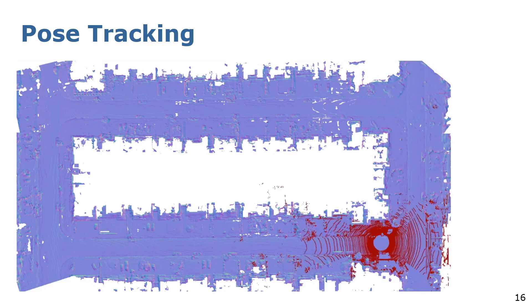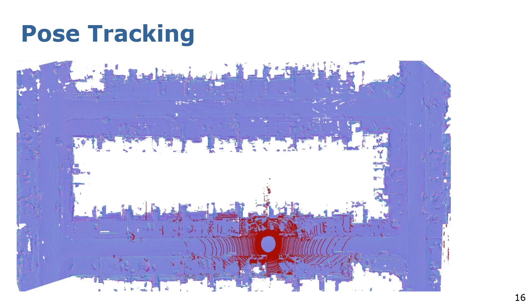Here, we can see our approach running on the Apollo South Bay dataset. We have learned the blue map from a set of scans. The position of the red scans can then be tracked by always registering it to the map. Be aware that the scans for mapping and registration are from different points in time. Therefore, the scene changed, for example due to cars parking at different positions. As you can see, we are still able to reliably track the position of the car.